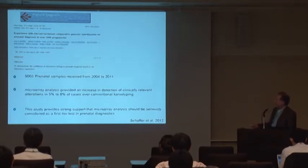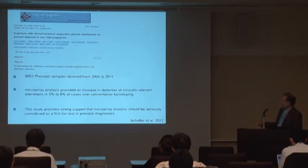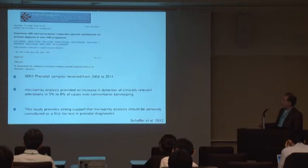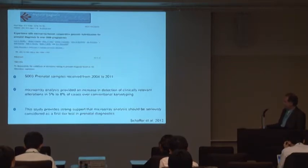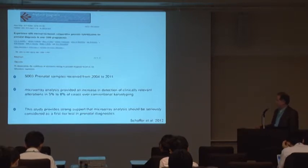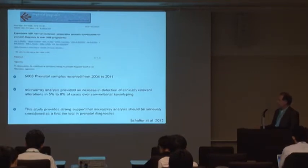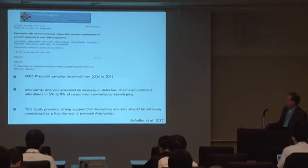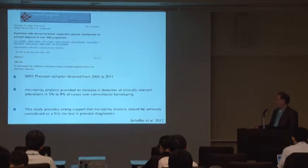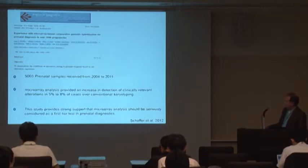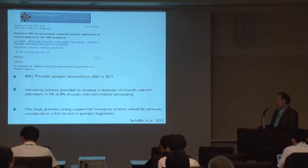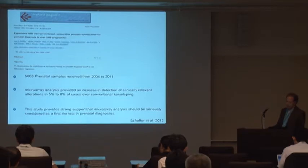We'll switch gears just slightly to amnios. We recently started doing amnios in our lab. There's been several studies published last year that compared arrays to karyotyping and FISH. This particular study by Schaffer et al. had about five thousand three samples in their subset. Their microarray analysis provided an increase in detection of clinically relevant alterations in five to eight percent of their cases over conventional karyotyping. If you take just the cases that had normal karyotyping, it drops to maybe six percent. Six percent of all the cases that had normal karyotype had an appreciable alteration found by array. Their study suggested that microarray analysis should be seriously considered as a first tier test in prenatal analysis.